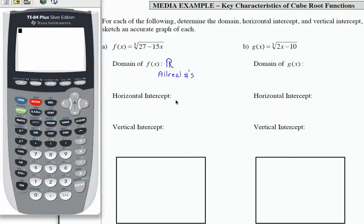To find the horizontal intercept, we take what's underneath the radical, 27 minus 15x, and we set it equal to 0. I'm going to add 15x to both sides, and then divide both sides by 15. That's going to give me x is 27 over 15, and I'm going to divide 27 by 15 on my calculator and round it, giving me 1.8.